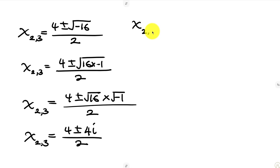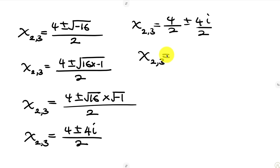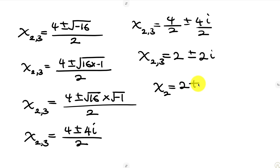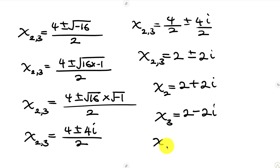We can separate the fraction: x equals 4 over 2, plus or minus 4i over 2. Simplifying, 4 divided by 2 is 2, and 4i divided by 2 is 2i. So we have two values of x from here: the second value is 2 plus 2i, and the third value is 2 minus 2i. In total, we have three values of x — one real number (x equals 2) and two complex numbers.